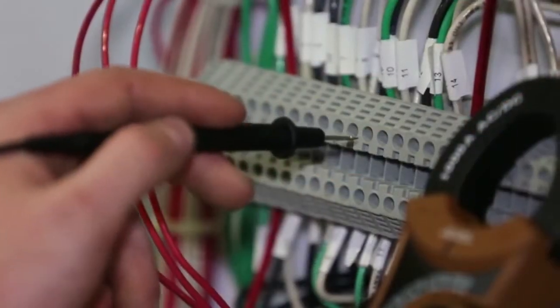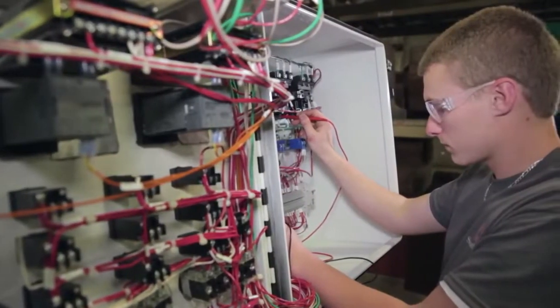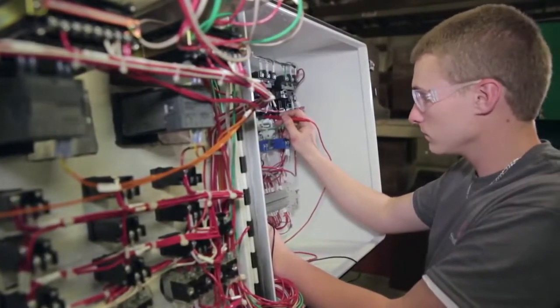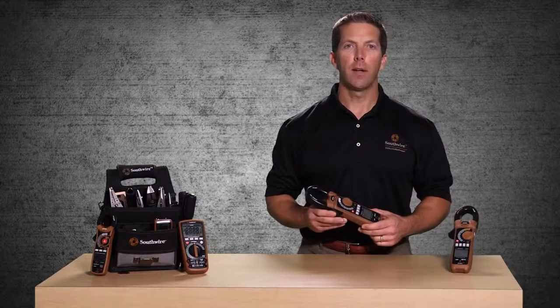True RMS readings provide more accurate AC voltage and current readings in the presence of harmonic distortion. This distortion is common on electrical loads such as fluorescent lighting, computers, and other electronic devices.